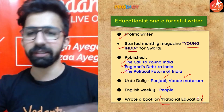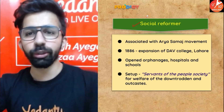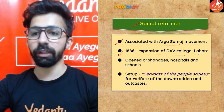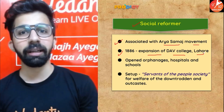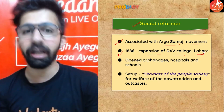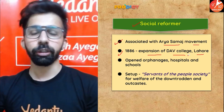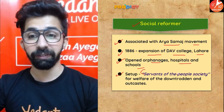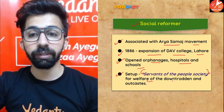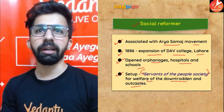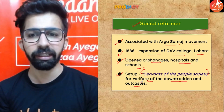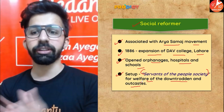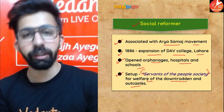As a social reformer, he was associated with the Arya Samaj movement. In 1886 he expanded the DAV College in Lahore to spread Indian education. He opened orphanages, hospitals, and schools, and set up the Servants of the People Society for the welfare of the downtrodden and outcastes — the lower-caste people who were not given equal treatment in Indian society — to uplift their condition.